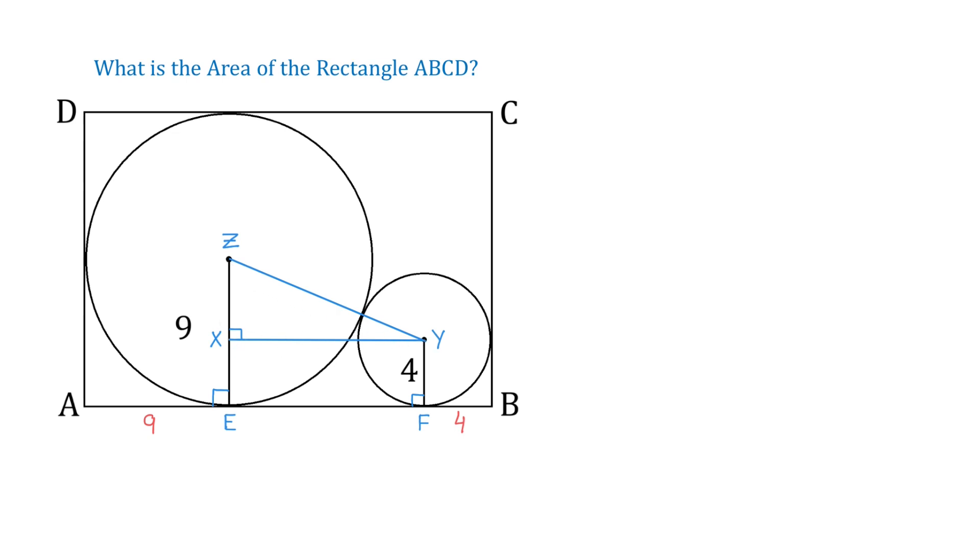In this triangle, the hypotenuse is 13 units, because it is the sum of the radius of 9 units, and the radius of 4 units. Now, in the rectangle XYFE, this side is 4 units, then this side is also 4 units. And if the radius is 9 units, and XE is 4 units, then XZ will be 5 units.